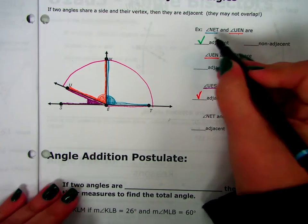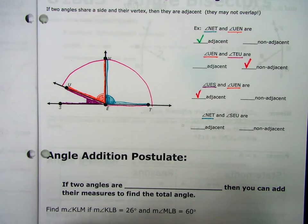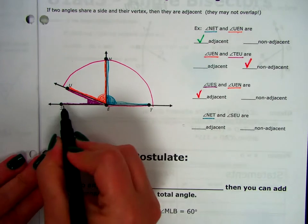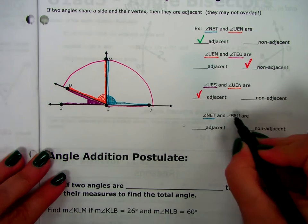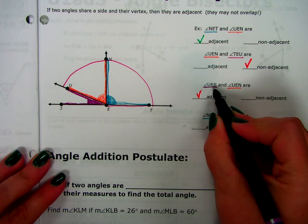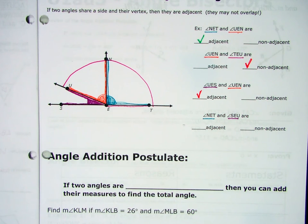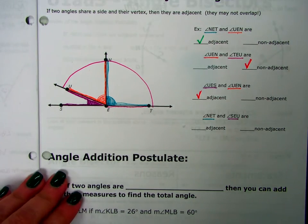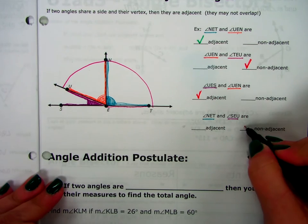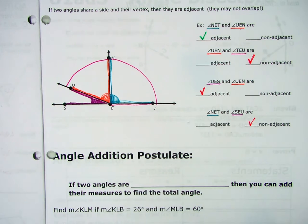And then N-E-T, which we already did up here. N-E-T is the blue one. And S-E-U. S-E-U we did already. That's the purple one. They just switched the order of the letters. S-E-U is the same as U-E-S. So I'm looking at the blue one on the right and the purple one on the left. Are they adjacent or non-adjacent? Non-adjacent.